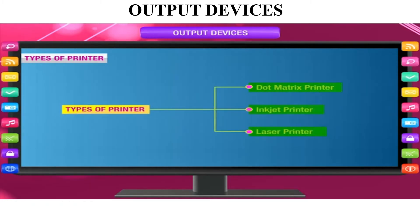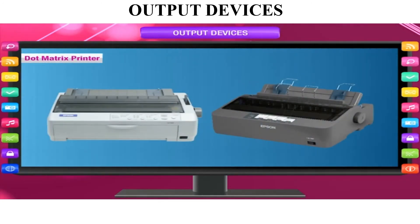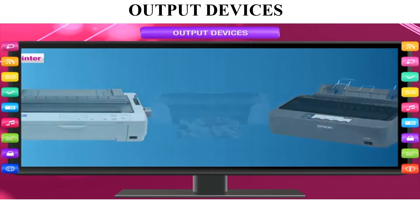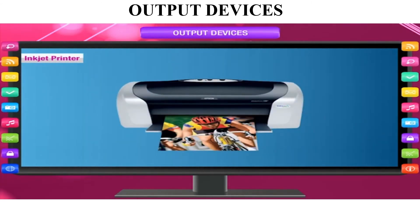The three main types of printers are: dot matrix printer, inkjet printer, and laser printer. The dot matrix printer looks like a typewriter and prints in dot form. It is the oldest type of printer and the print quality is not very good.